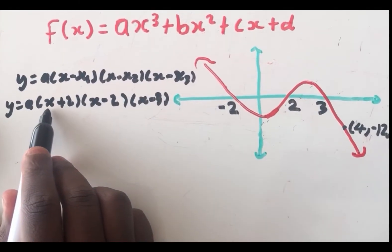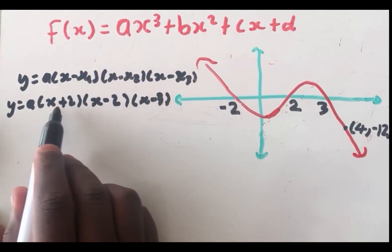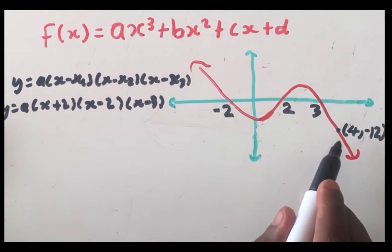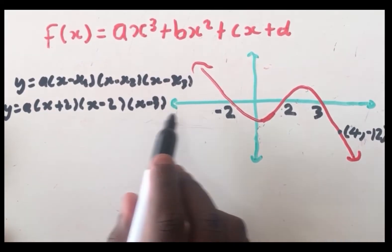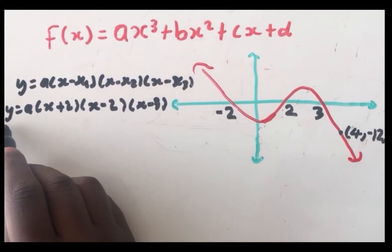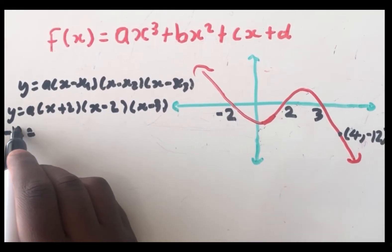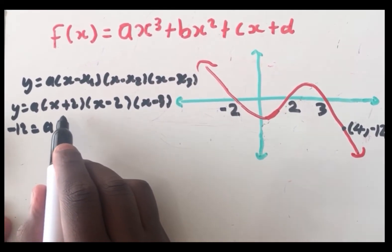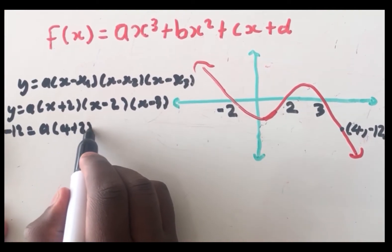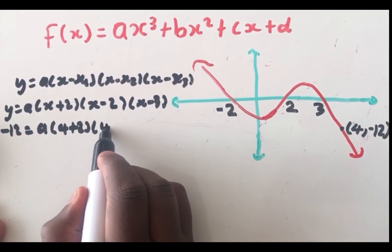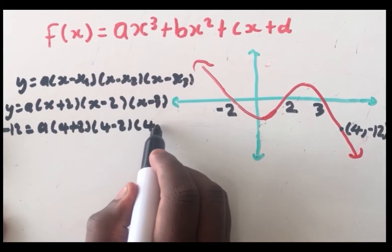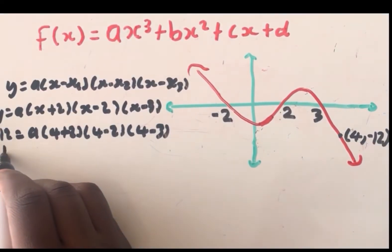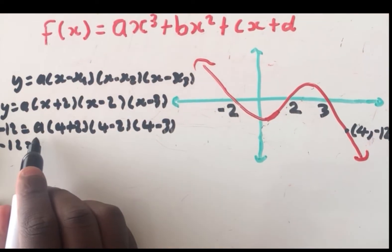This x is the same as this x, which is the same as this x — they're not different, hence they're not called x₁, x₂, and x₃. So in place of x everywhere, we'll put 4. The y-value is −12. Then we're going to have −12 = a(4 + 2)(4 − 2)(4 − 3). Our first goal is to find a.